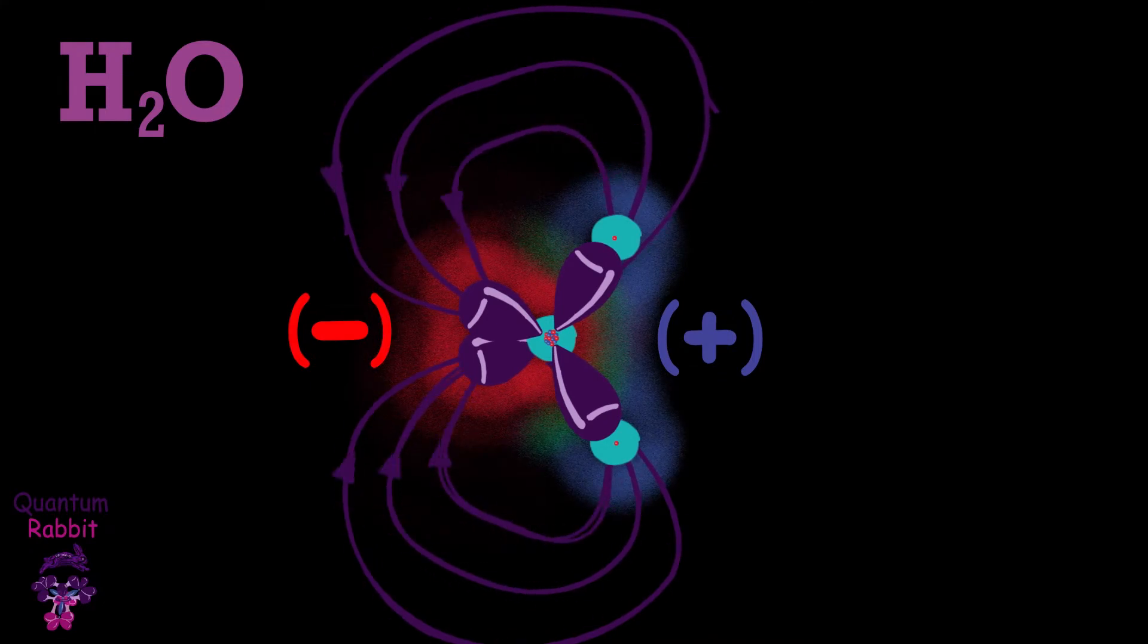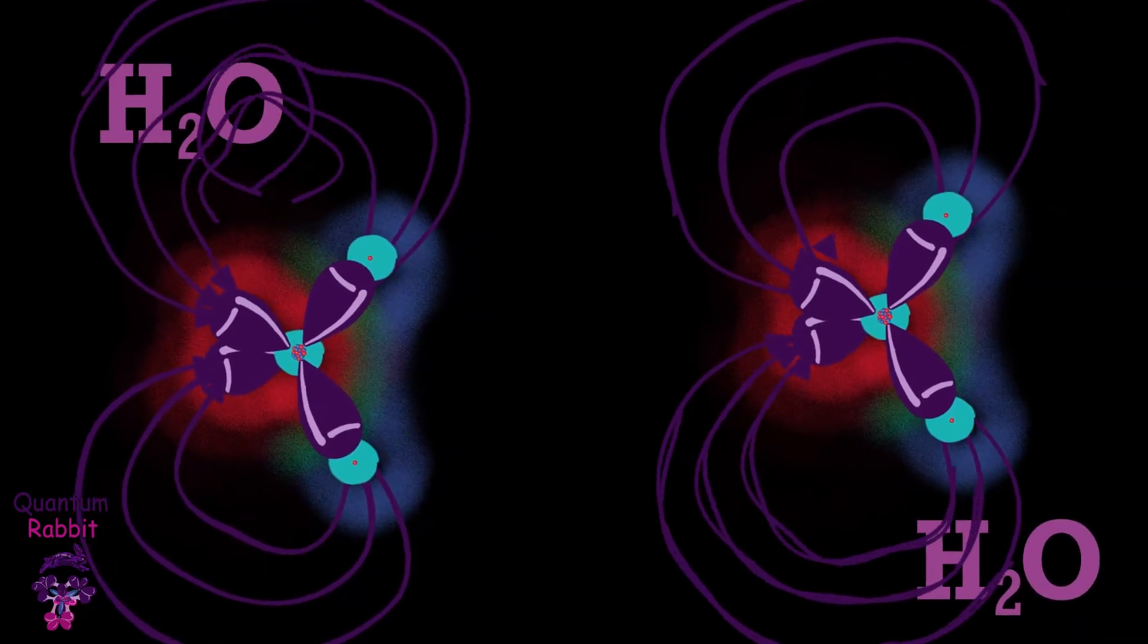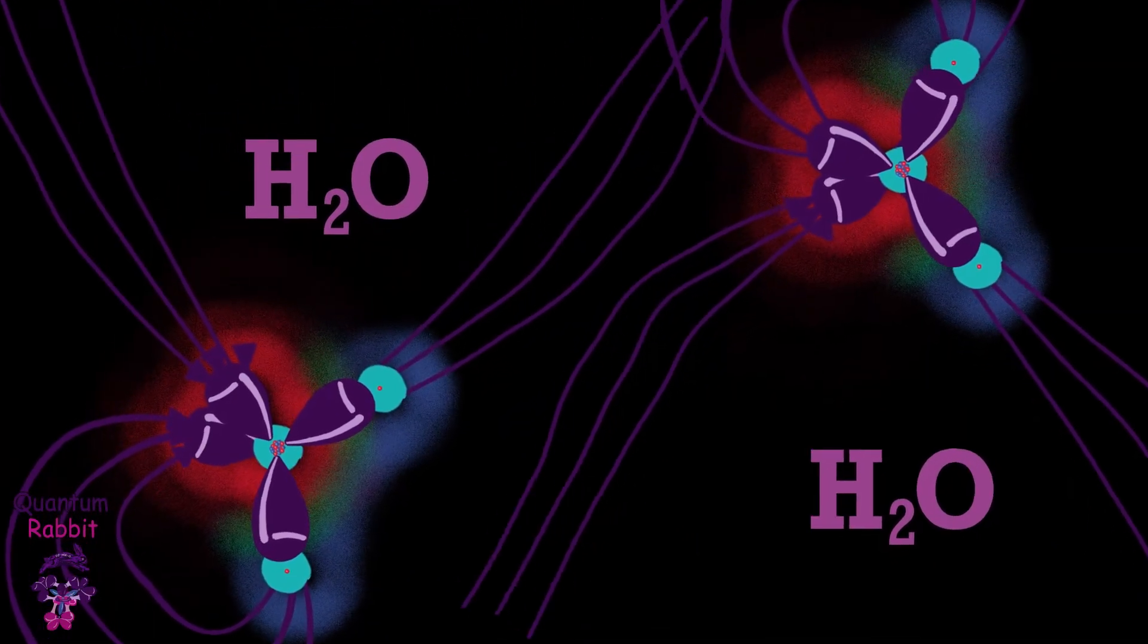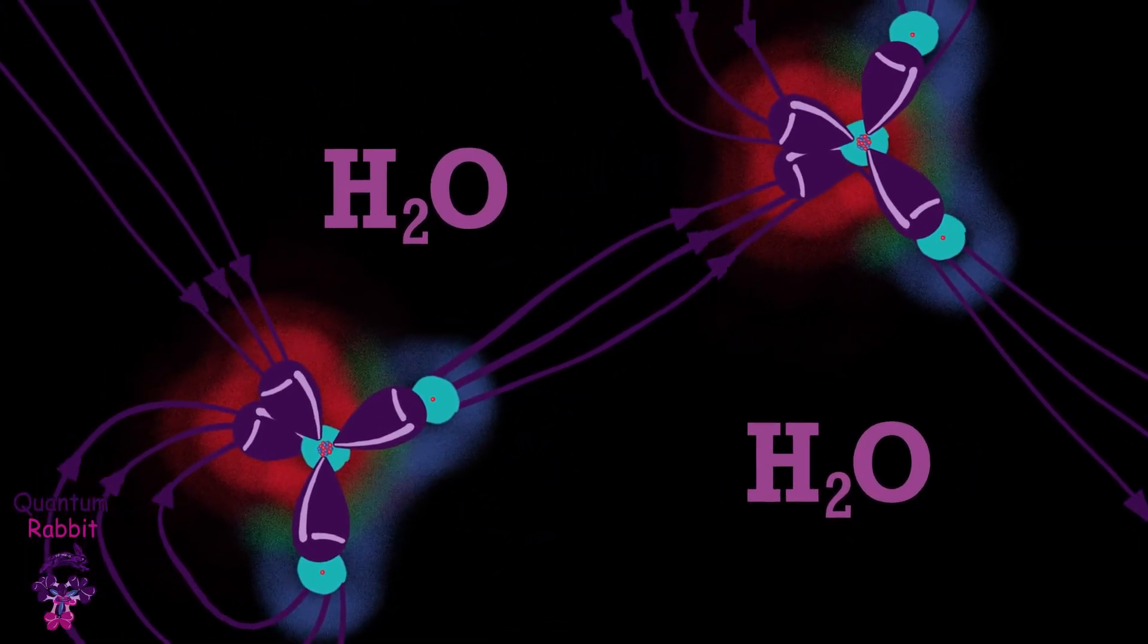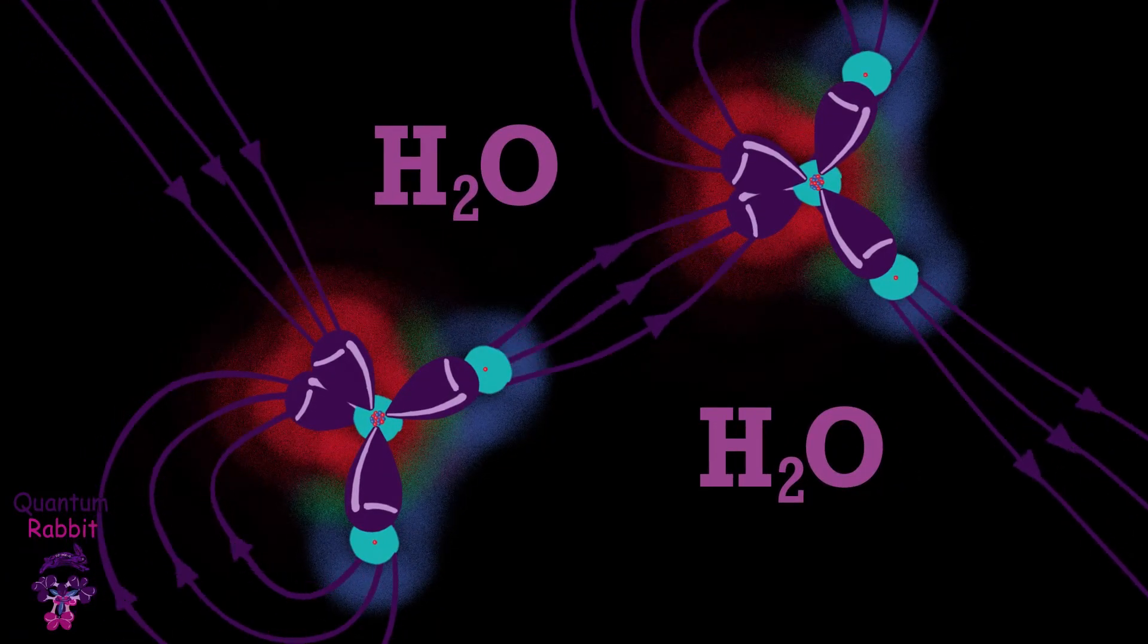If we put a water molecule here and another water molecule here, we can see how its negative and positive parts are attracted, forming hydrogen bonds. These hydrogen bonds are 20 times weaker than covalent bonds.